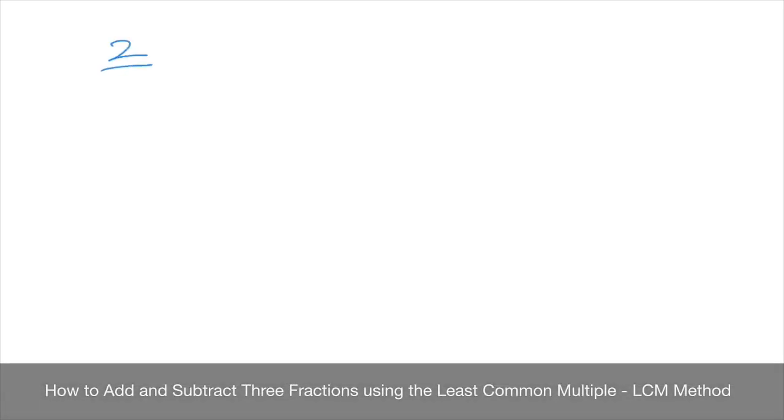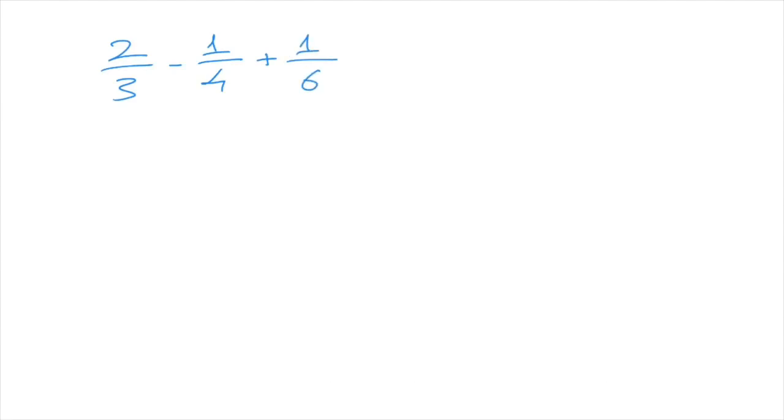Say we're asked to calculate 2 thirds minus 1 over 4 plus 1 over 6. To add or subtract these three fractions, the first thing we need to do is make sure that they are all written over the same denominator.